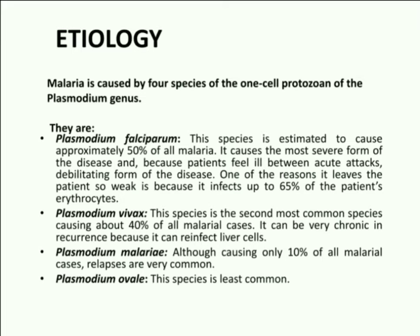The last one is Plasmodium ovale — this species is the least common. One more species, Plasmodium knowlesi, is found throughout Southeast Asia and is the most common cause of human malaria in Malaysia. Falciparum malaria is potentially life-threatening. Infections with Plasmodium vivax and Plasmodium ovale are occasionally severe, but the parasites can remain dormant in the liver for many months, causing a reappearance of symptoms months or even years later.